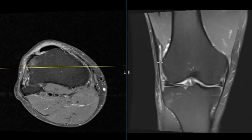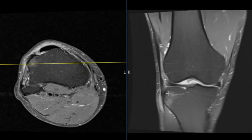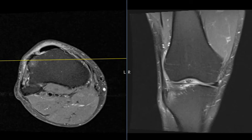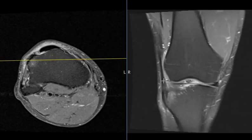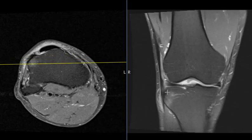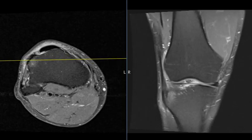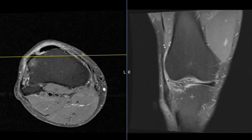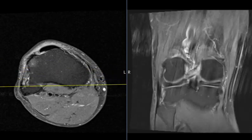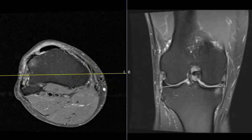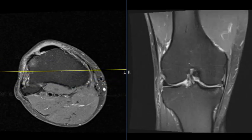Normally we just see this one thing — we see fluid here, inflammation in this area. But it's much more rare to see the inflammatory changes here where the iliotibial band attaches to Gerdy's tubercle. He also has some abnormal signal in his meniscus, which is for another video.